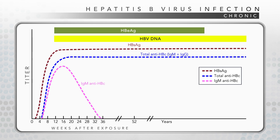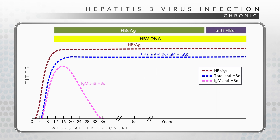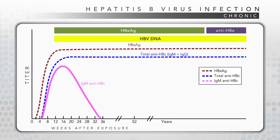Hepatitis B-E antigen, HBeAg, shown in green, generally indicates higher levels of HBV DNA and thus greater infectivity. Presence of antibody to hepatitis B-E antigen, anti-HBe, shown in purple, conveys just the opposite scenario. Chronic HBV infection is diagnosed when a patient has a positive serologic test result for either HBsAg, HBeAg, or HBV DNA on at least two separate samples six months apart, or when a patient has a positive test for any one of these on a single sample and has a negative test for IgM anti-HBc.